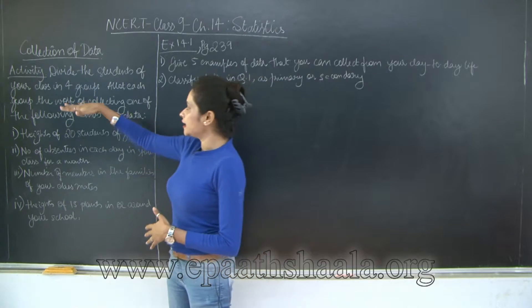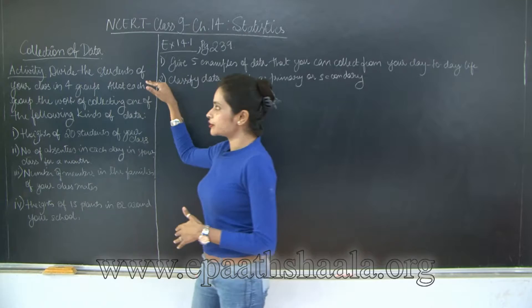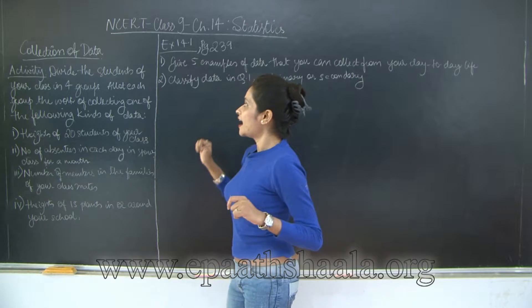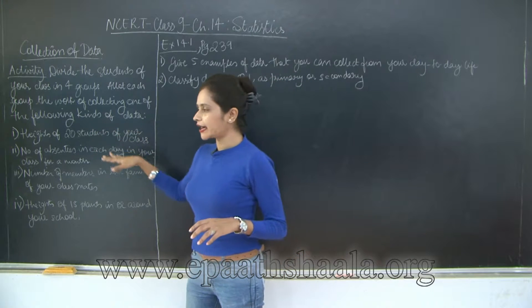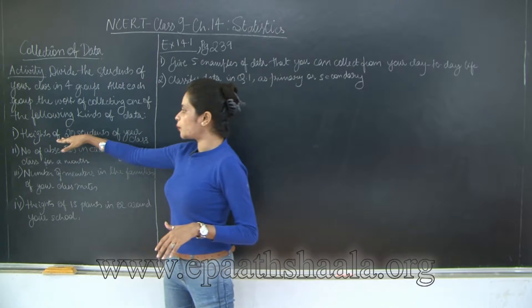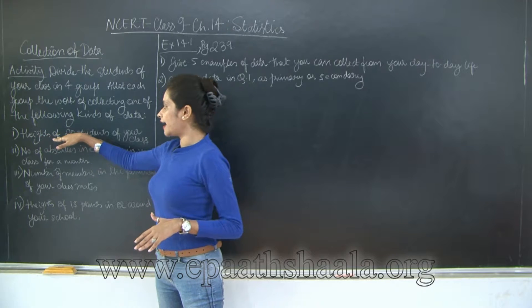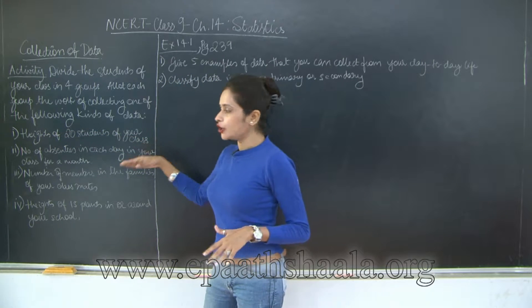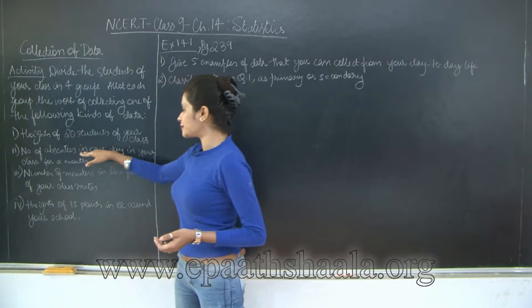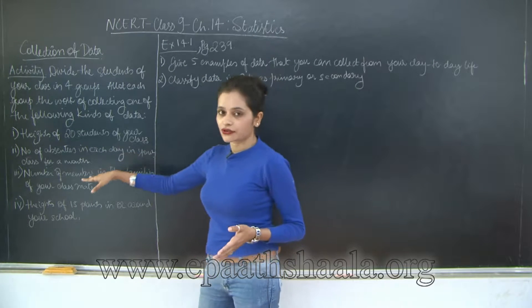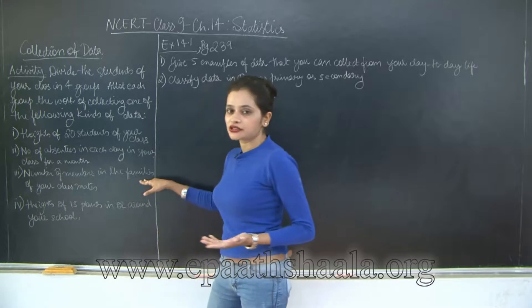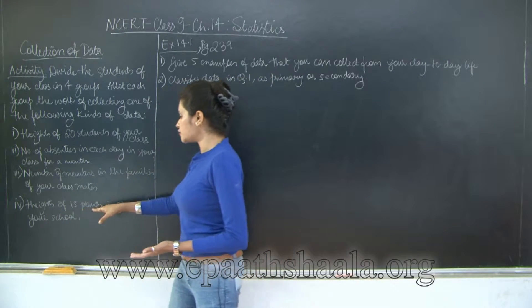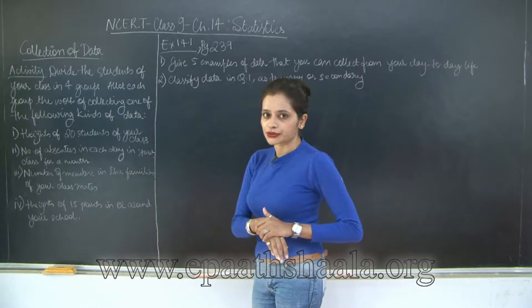The first thing is an activity where you divide the students of your class into four groups and allot each group the task of collecting any of the following kinds of data. Group 1 is supposed to collect the heights of 20 students of your class. Group 2 will collect the number of absentees each day in your class for a month. Group 3 will find the number of members in the families of each of your classmates, and Group 4 will find the heights of 15 plants in or around your school.